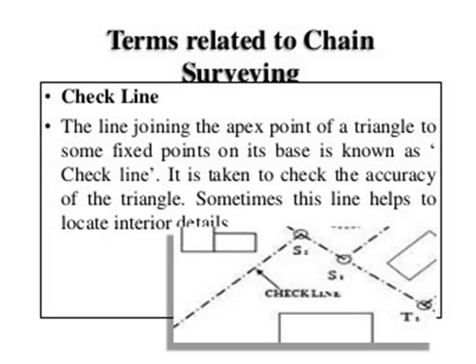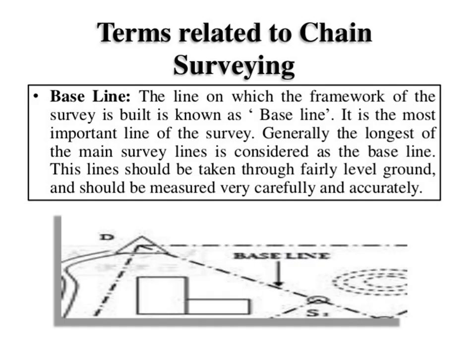A check line is a line joining the apex point of a triangle to some fixed point on its base. It is taken to check the accuracy of a triangle and sometimes helps locate interior details. In the absence of angular measurement, the check line can be used to plot the given area accurately. The baseline is the line on which the framework of the survey is built — it is the most important line, generally the longest main survey line, laid on fairly leveled ground and measured very carefully.